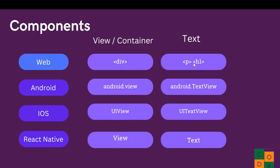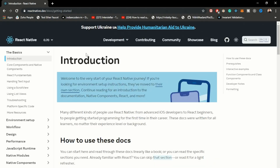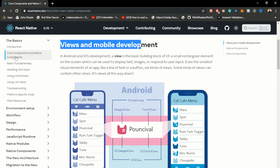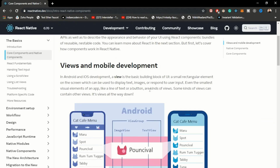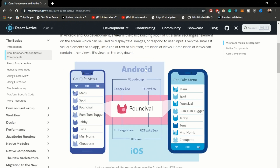For text, on the web we use paragraph or h1 tags, on Android we use the TextView component, and on iOS we use UITextView. In React Native, we use Text, which compiles to native platform equivalents. We have many more components available - let's move on to reactnative.dev. Under the guides with version 0.70, we can look at core components. Scrolling down, we can see views and mobile development details, including ImageView and TextView for Android, and UIImageView and UITextView for iOS.